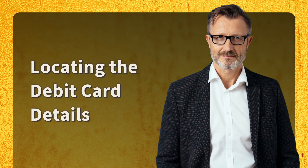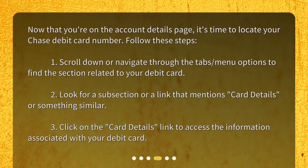Locating the debit card details. Now that you're on the account details page, it's time to locate your Chase debit card number. Follow these steps. 1. Scroll down or navigate through the tabs and menu options to find the section related to your debit card. 2. Look for a subsection or a link that mentions card details or something similar. 3. Click on the card details link to access the information associated with your debit card.